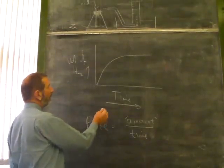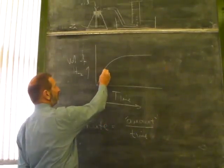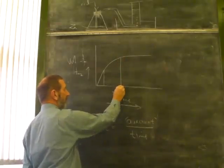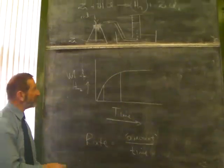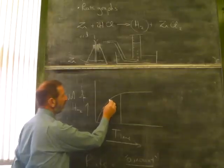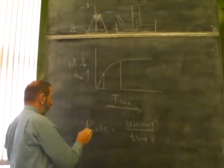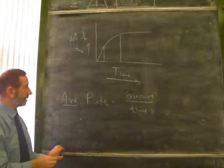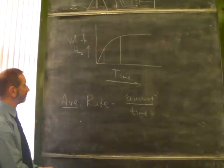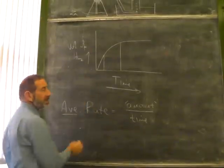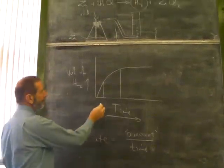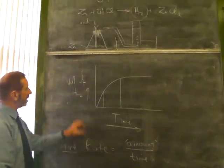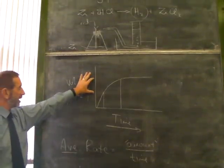Let's have a look at this graph. Let's say we wanted to know the rate between this point and this point. Now, you can see the rate is changing - it's gradually slowing down. So strictly speaking, we should use the term average rate because it's not a constant rate. Basically, we need to know the time interval and how much gas has been produced in that time interval.